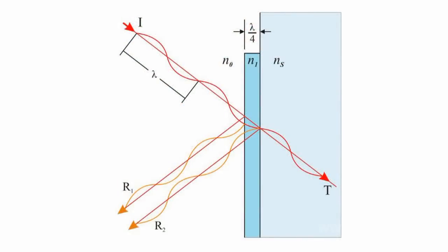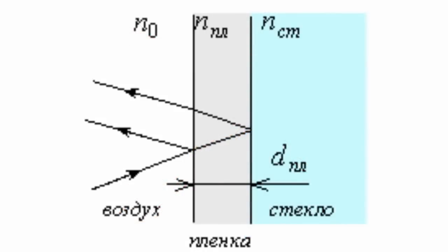If we use one anti-reflection layer for best effect, the refractive index of the anti-reflection film should be equal to the square root of the refractive index of the optical lens glass. The film thickness should be equal to one-fourth of the wavelength at the center of the visible spectrum.